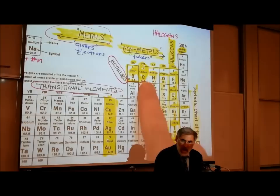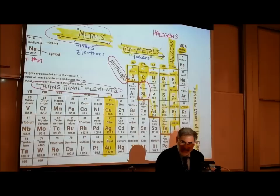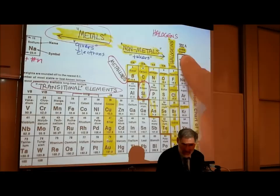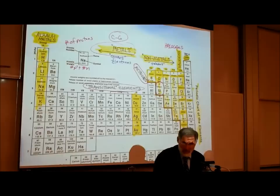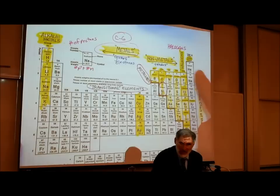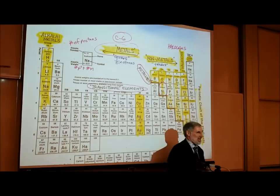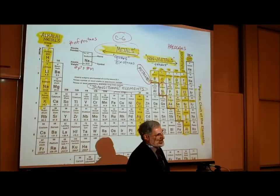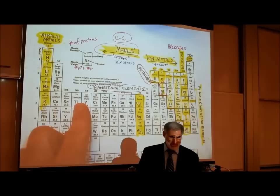There are three major categories of elements: the metals are the givers, the non-metals are the takers, and the noble gases don't do either — they don't give and they don't take. So there are three personality types among elements: the givers, the takers, and the ones that don't do either.